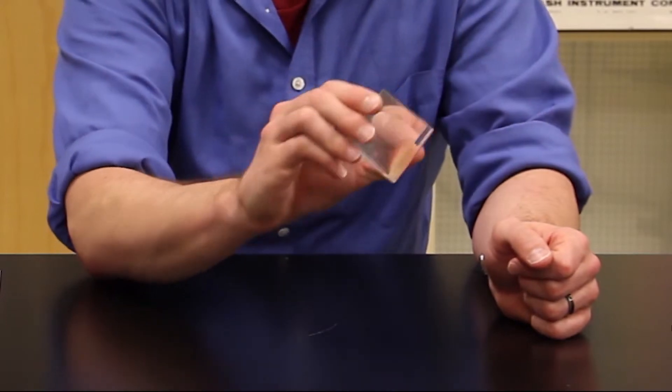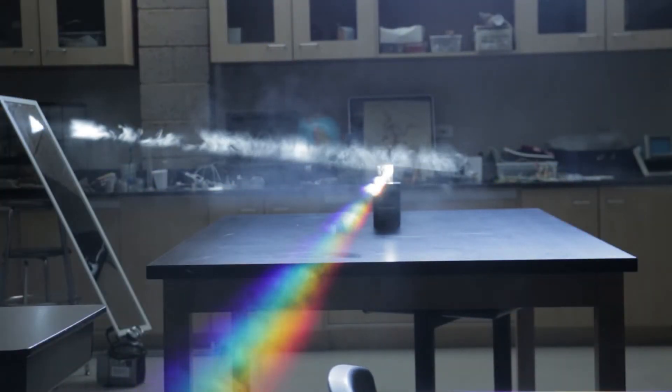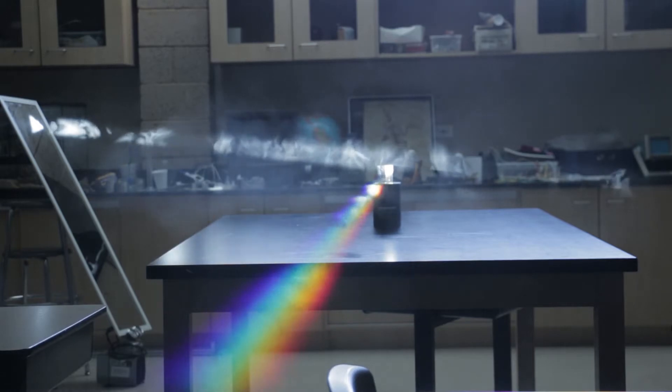This glass prism can separate the Sun's light by its color, or wavelength, and this is how infrared light was first discovered.